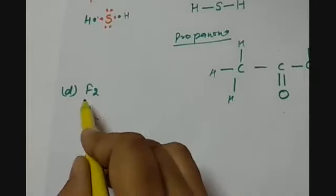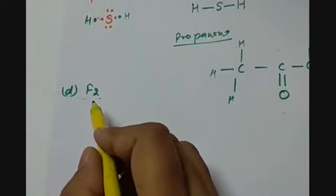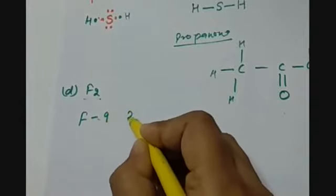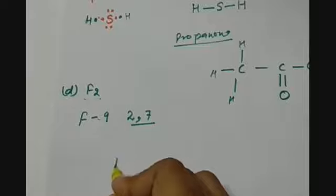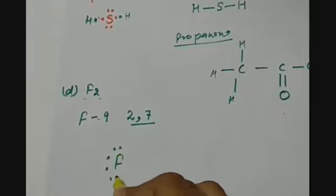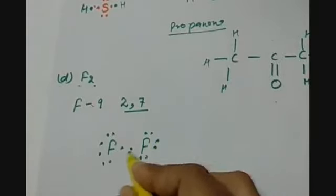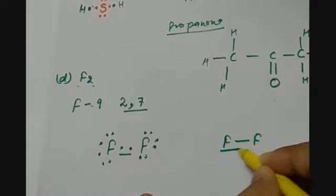For F2, the molecule of fluorine has 2 fluorine atoms. Fluorine has atomic number 9 with electronic configuration 2,7, so it needs one more electron to complete its octet. Each fluorine shares one electron of its outermost orbit with the other fluorine in covalent bonding. Both fluorine atoms share these two electrons, forming one single covalent bond between the fluorine atoms.